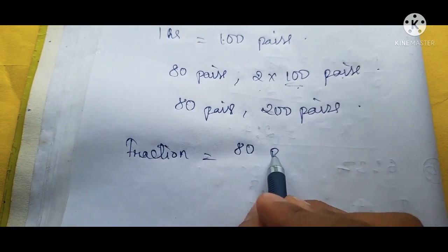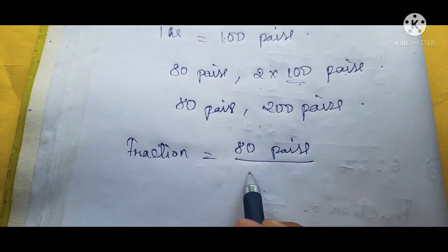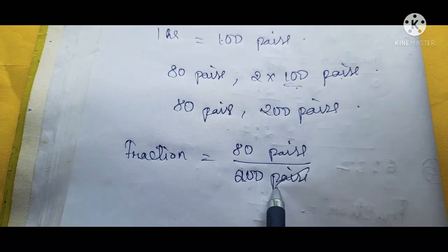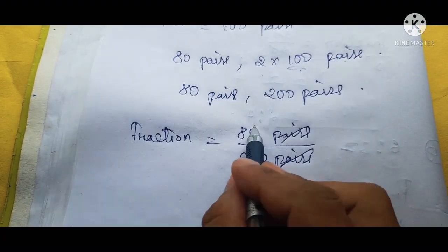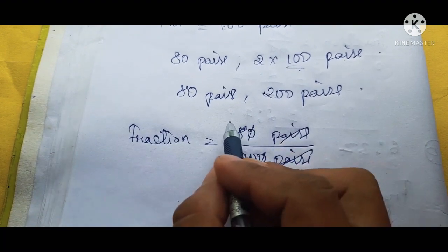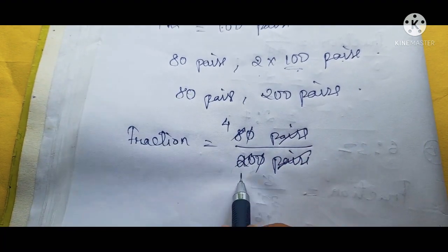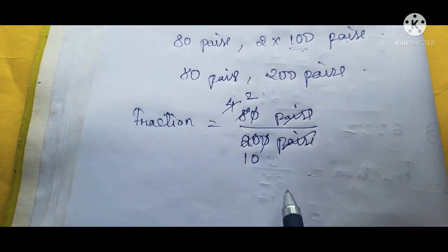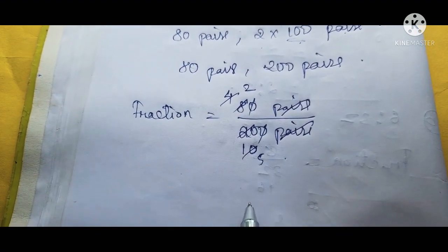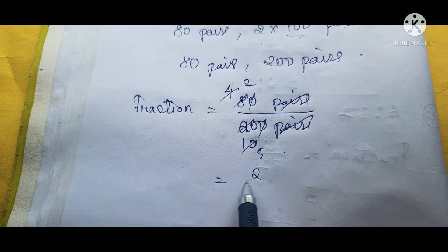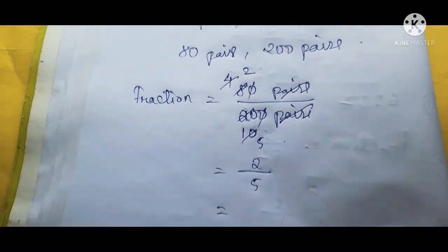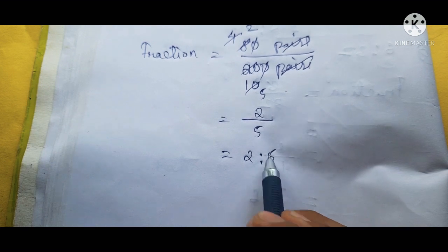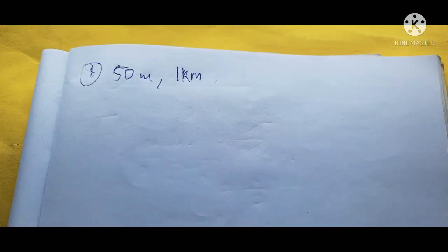Now we make them into a fraction: 80 paise by 200 paise. Paise cancel. We cancel the zeros and simplify: 8 by 20, then 2 by 5. The fraction is 2 by 5, and converting to a ratio gives 2 is to 5. This is the answer.